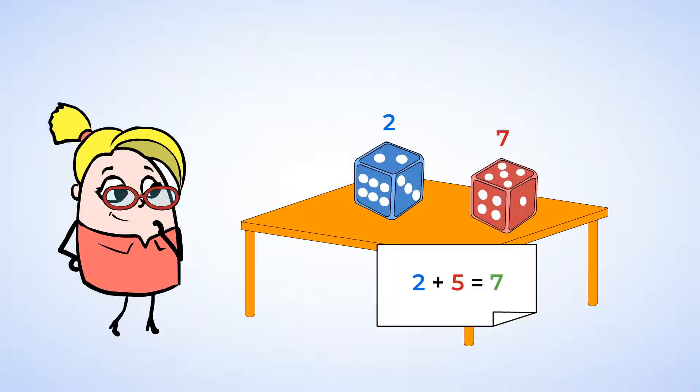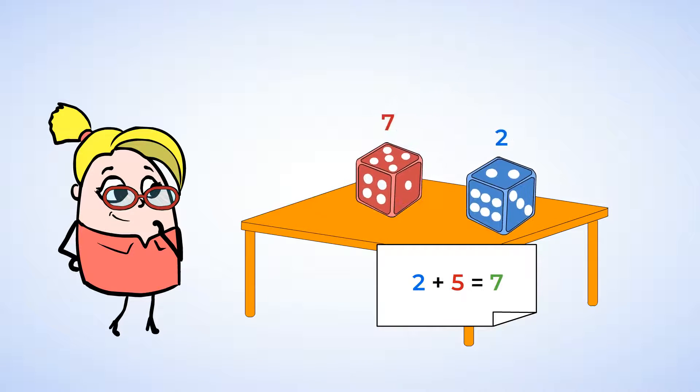You just learned something really helpful about addition. We can change the order of the numbers without changing the answer. The numbers that are being added together are called addends. For example, two and seven are the addends in these addition sentences.